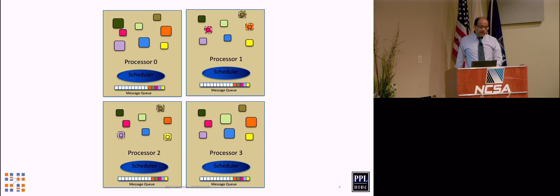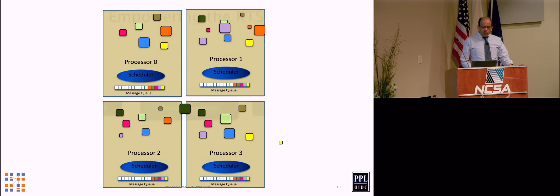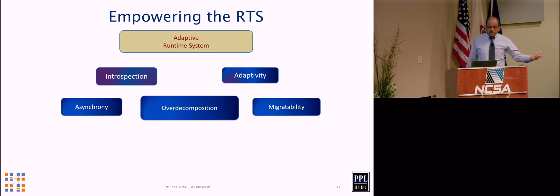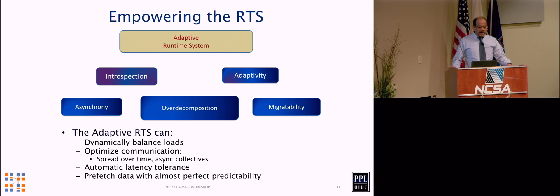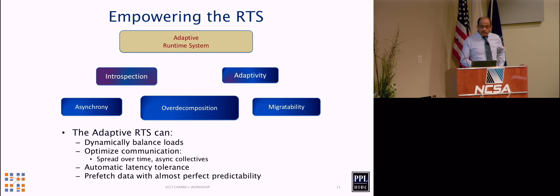With many processors, the runtime system mediates communication and schedules objects — knowing who talks to whom and how heavy or light they are — and therefore can migrate objects to balance load or optimize communication. Adding introspection and adaptivity to the runtime gives you an adaptive runtime system. With that you can dynamically balance loads, optimize communications, get some automatic latency tolerance, and do prefetch of data into device memory, because we know exactly which object is running next. This gives predictability much better than the standard principle of locality.